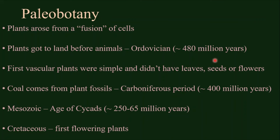Now let's talk about the evolutionary history of plants — paleobotany. Plants have chloroplasts because an ancestral cell that could not do photosynthesis developed a close relationship with cyanobacteria that could. Over time, the cyanobacteria became chloroplasts. That's why we say plants arose from a fusion of cells — one that could not do photosynthesis and one that could. Plants got to land before animals, in the Ordovician period, about 480 million years ago.